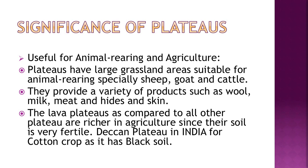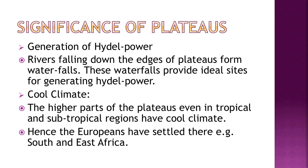Plateaus have large grassland areas suitable for animal rearing — especially sheep, goat and cattle — providing wool, milk, meat, hides and skin. Lava plateaus are rich in agriculture due to fertile soil; the Deccan Plateau in India is famous for cotton crop because of its black soil. Rivers falling down the edges of plateaus form waterfalls, providing ideal sites for generating hydel power. Higher parts of plateaus in tropical and subtropical regions have cool climates, attracting European settlement in south and east Africa.